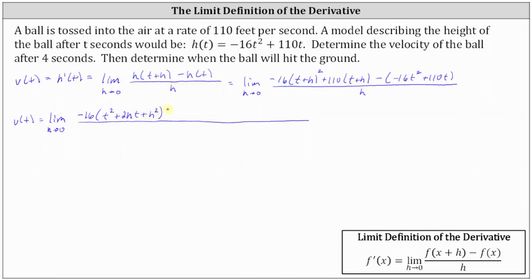Next, we distribute 110, which gives us plus 110t and then plus 110h. And then minus negative 16t squared simplifies to plus 16t squared. Then we have minus 110t. All this is divided by h.